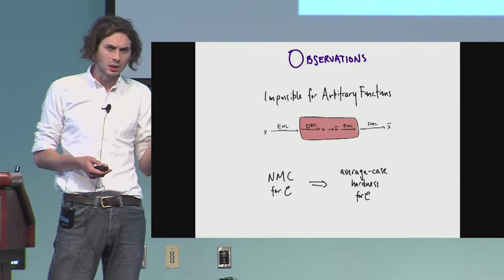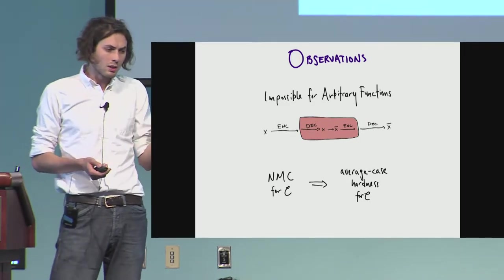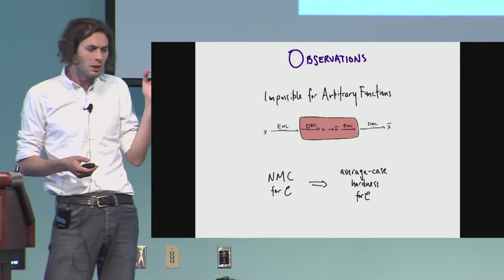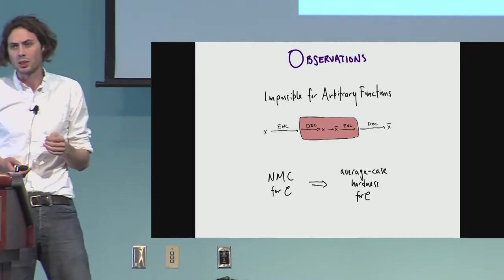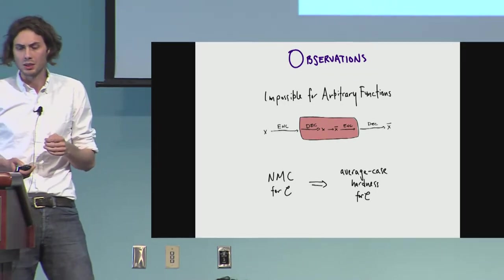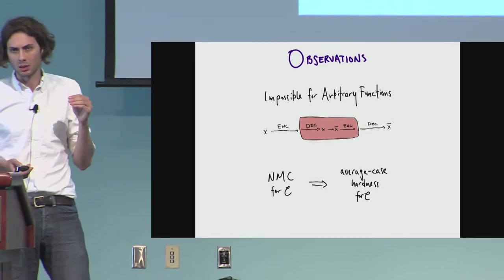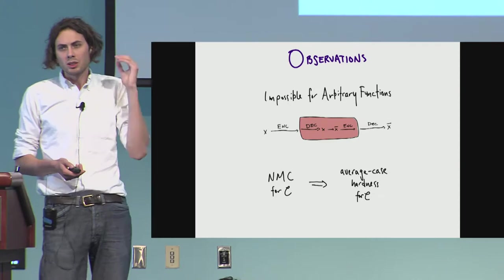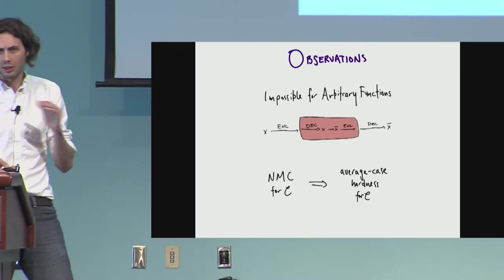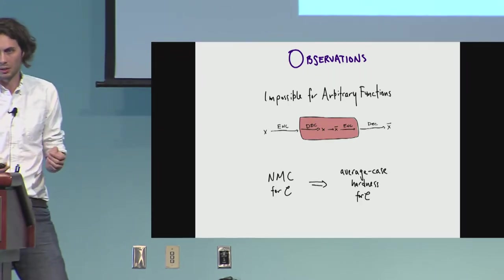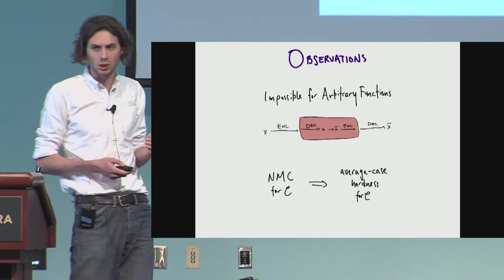If you have a non-malleable code against a complexity class, it implies a very strong average case hardness bound against the complexity class. So this basically limits, if you want an unconditional non-malleable code, an explicit unconditional non-malleable code, it sort of limits where you have hope of achieving such an object, because basically it implies really strong circuit lower bounds.